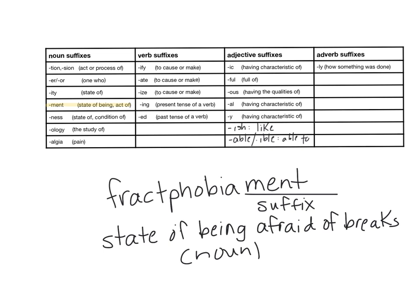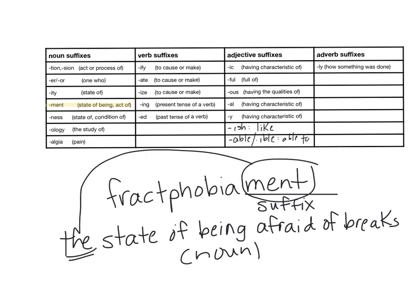I know it's a noun because it's in the noun suffix category. Typically I would include the word 'the' — the state of being afraid of breaks. If I think about how I would use that in a sentence: we all know Mrs. Moulton broke both of her ankles a couple of years ago, so maybe Mrs. Moulton suffers from fractphobiament because she has broken both of her legs and is now afraid of breaking more things. The definition of the suffix is what I use to start my definition — that's really important.